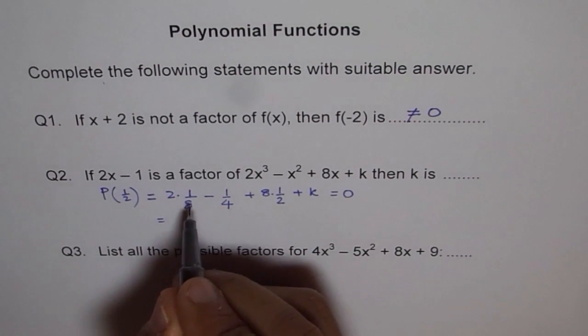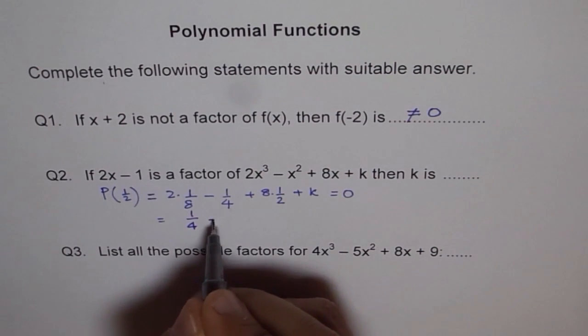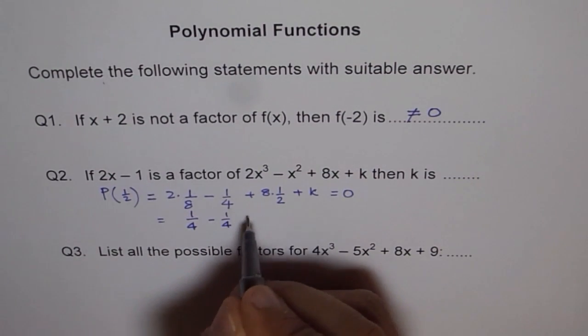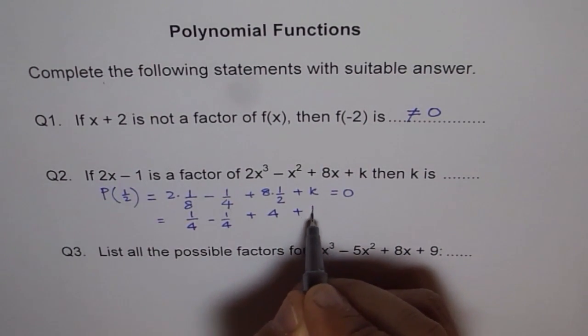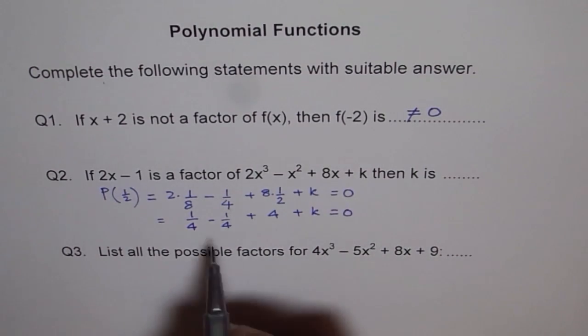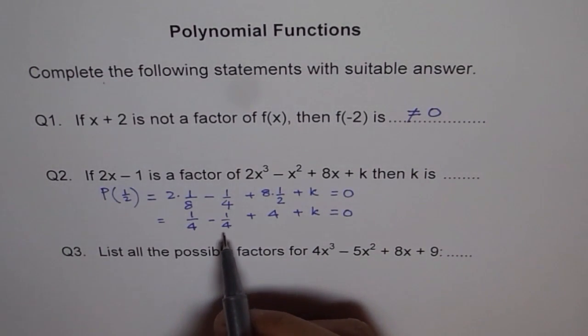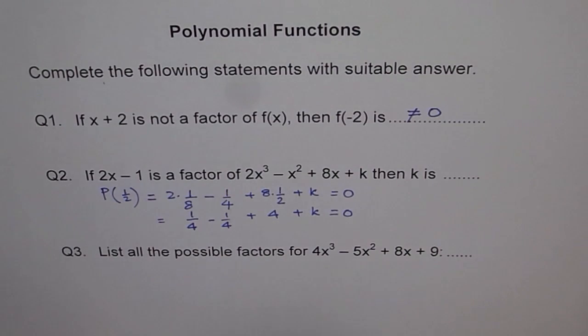When you divide this you get 1/4 - 1/4 plus 4 + k equals to 0. 1/4 - 1/4 is 0, and k equals to -4.